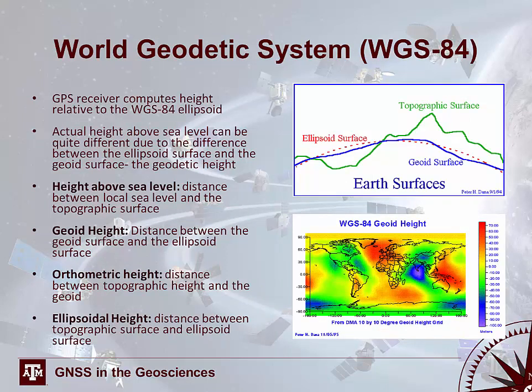As mentioned earlier, GPS receivers natively compute height relative to the WGS-84 ellipsoid. Keeping in mind that the WGS-84 ellipsoid is a mathematically smooth or simplified surface of the Earth, the actual height above sea level can be different because there is likely to be mismatch between the simplified ellipsoid and the more complex geoid — these surfaces may not line up 100% perfectly. There are several different measures of height which you need to know. The height above sea level is the distance between the local sea level as represented by the geoid and the true topographic surface. The geoid height is the distance between the geoid surface and the ellipsoid surface — essentially a measure of how much the geoid deviates from the simplified mathematical ellipsoid model.